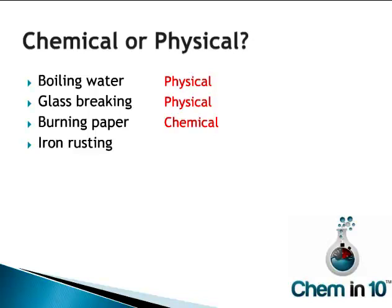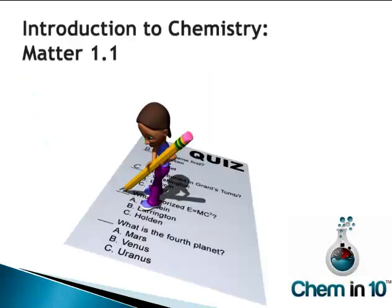Iron rusting — we've already seen that iron rusting is a chemical change. This concludes lesson 1.1 on matter. Please proceed to quiz 1.1 before continuing on to the next lesson.